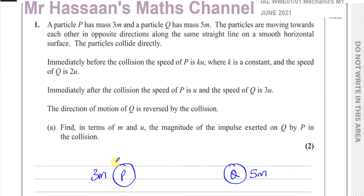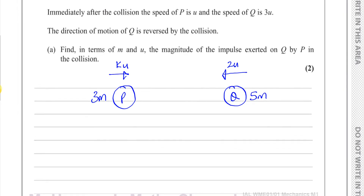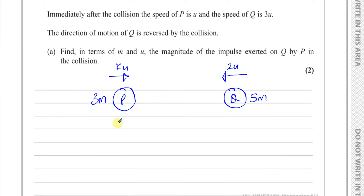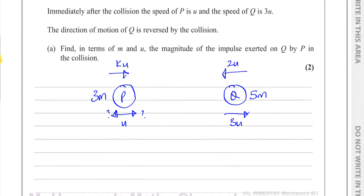It says they are moving towards each other before the collision. Immediately before the collision the speed of P is ku, moving in one direction, and the speed of Q is 2u in the opposite direction. Immediately after the collision the speed of P is u and the speed of Q is 3u. The direction of Q is reversed. We don't know whether P changed direction — that's why part B asks for two possible values of k.